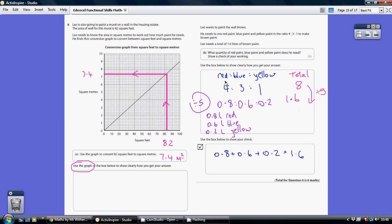So the amount of red we need is 4 divided by 5, which is 0.8 liters. The amount of blue we need is 3 divided by 5, which is 0.6 liters. And the amount of yellow we need is 1 divided by 5, which is 0.2 liters of yellow.